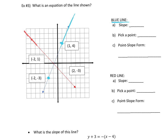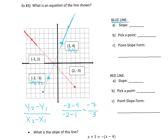Using the slope formula with (1, 4) as (x₁, y₁) and (−2, −3) as (x₂, y₂): slope = (−3 − 4) / (−2 − 1) = −7 / −3 = 7/3. That doesn't reduce, so the slope of the blue line is seven-thirds.